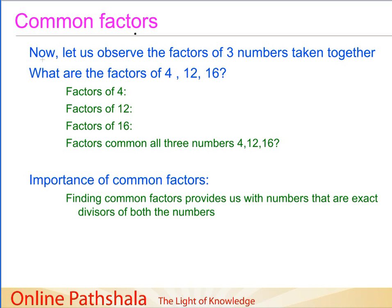Let us continue our discussion on common factors, but with one more modification — we will take 3 numbers together. We want to find out the factors common to those numbers. Let us say we want to find out the factors of number 4, number 12, and number 16. The factors for the number 4 are 1, 2, and 4.